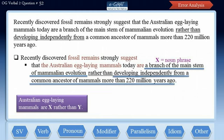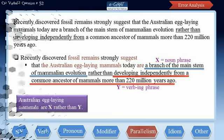The phrase 'developing independently from a common ancestor of mammals' stands for Y, and it is a verb-ing phrase. Since entity X lies in the non-underlined portion of the sentence, entity Y needs to be turned into a noun phrase in order to eliminate the parallelism issue. So we have a parallelism error in this sentence, and this is the only error. Let's find out which answer choice corrects this error.